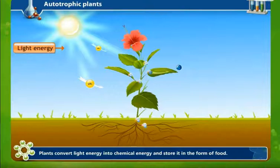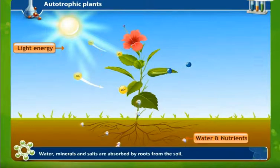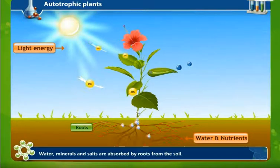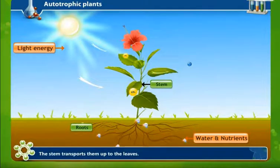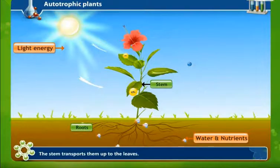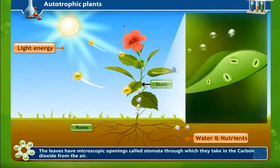The food is called glucose. The light energy is obtained from the sun. Water and minerals are absorbed from the roots from the soil — we water the plants, and manure is a supplement of nutrients given to the soil, which is absorbed from the roots, passed through the stem. The stem transports them to the leaves.